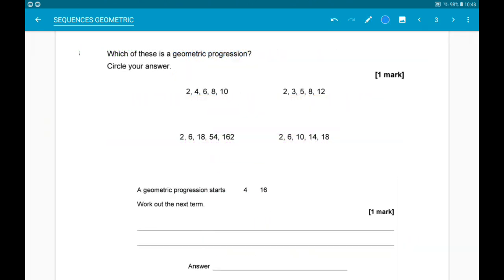Alright then, first up, which of these is a geometric progression? So, progression is the same as sequence. The first one, 2, 4, 6, 8, 10, we are adding 2 each time, that is arithmetic.